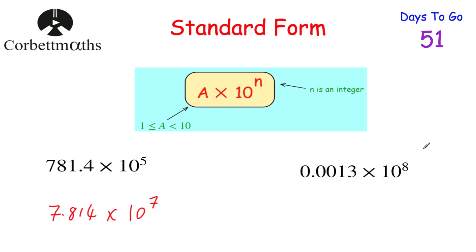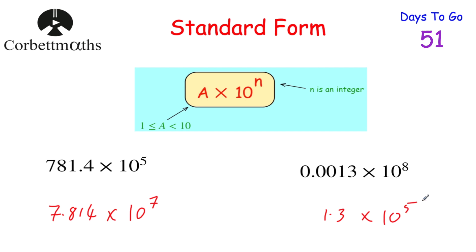Here's one for you to try: 0.0013 × 10⁸ is not in standard form. We need a number between 1 and 10, so choose 1.3 × 10 to a certain power. Moving from 0.0013 to 1.3, we've moved the digits 1, 2, 3 columns to the left — making it 1,000 times bigger. So we must make the power part 1,000 times smaller, reducing the power by 3: from 8 to 5. The answer is 1.3 × 10⁵.